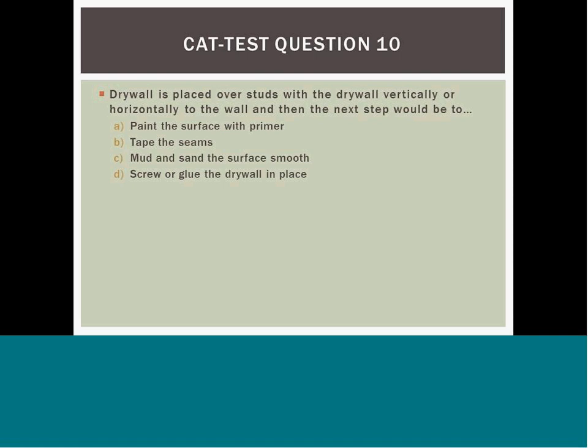Question 10: Drywall can be placed over studs either vertically or horizontally. After placing the drywall, the next step would be A) paint and primer, B) stay the same, C) mud and make the surface smooth, or D) screw or glue the drywall in place. Answer D is the best answer because you want the drywall to be secure before you attempt to perform the actions in answers A, B, and C.